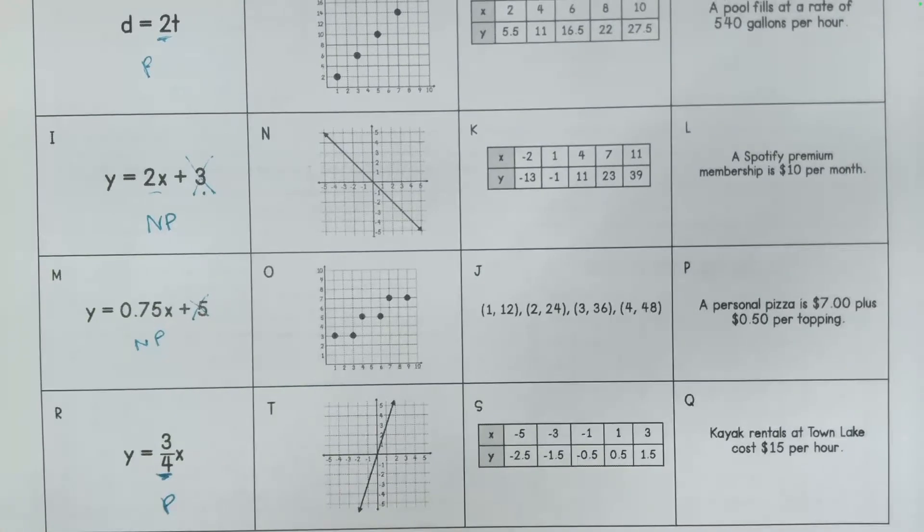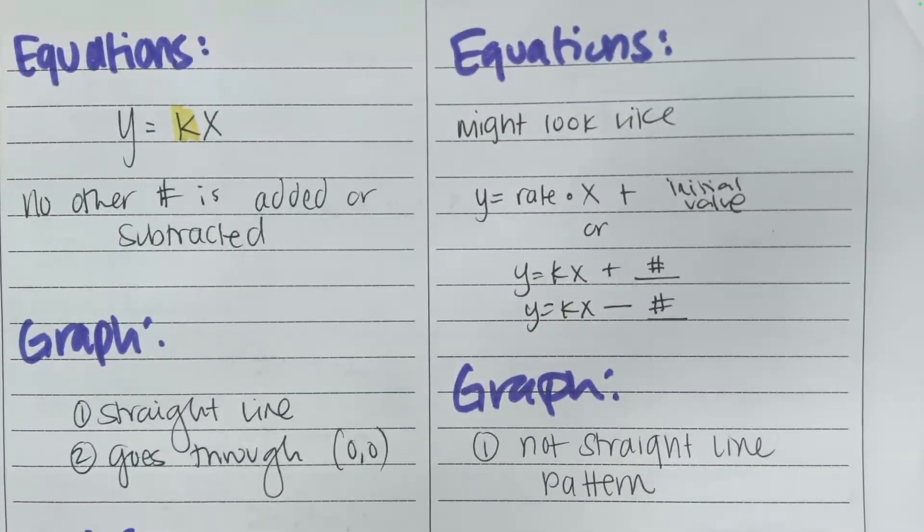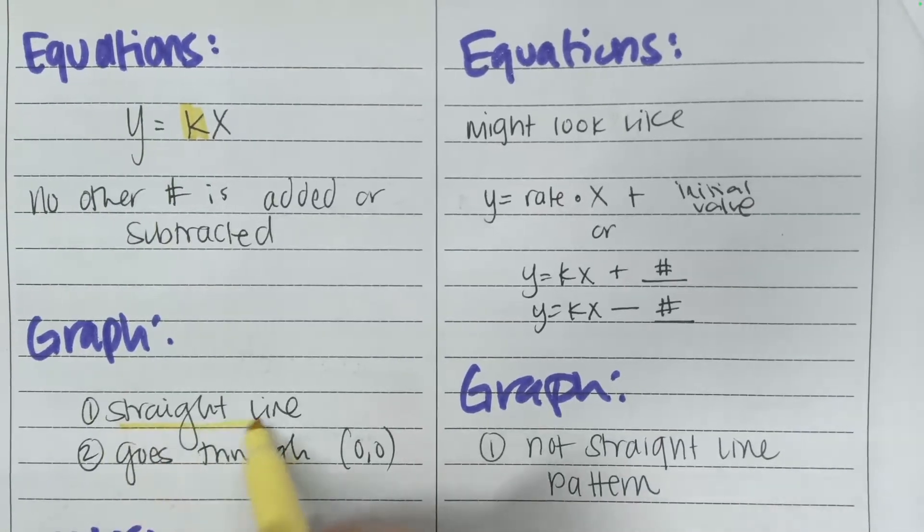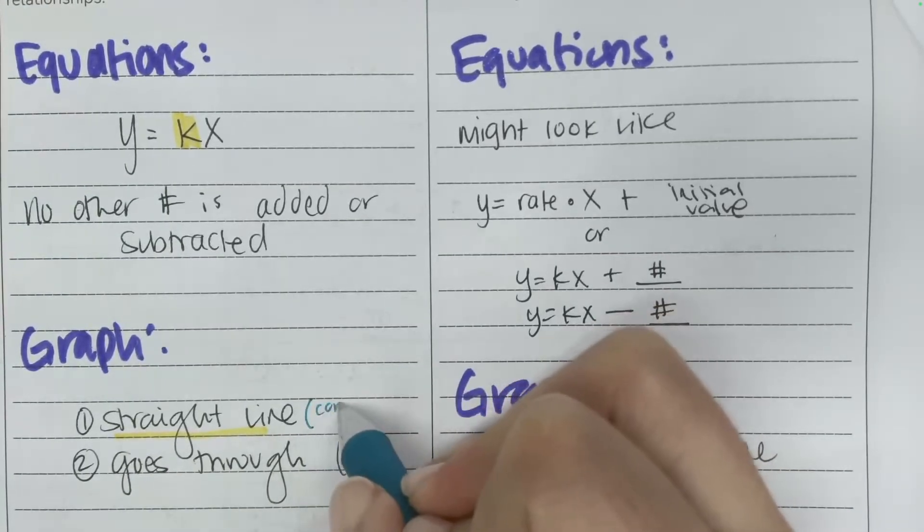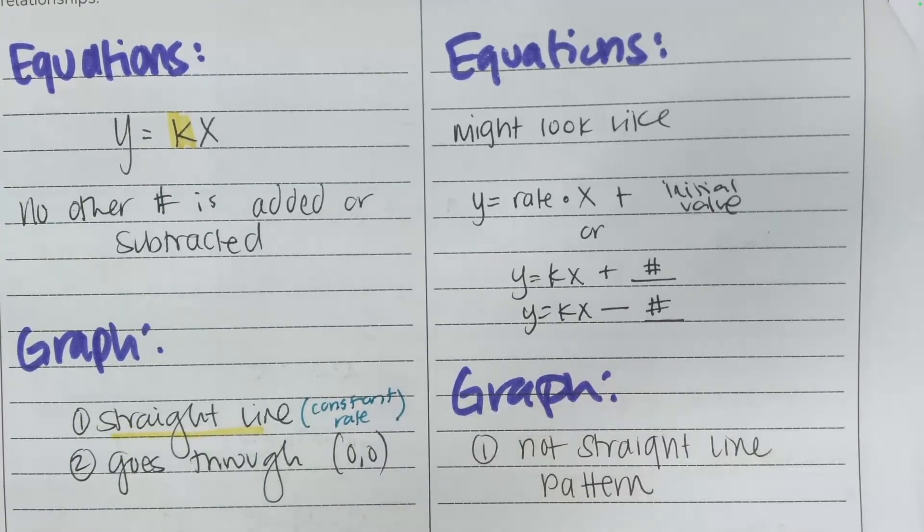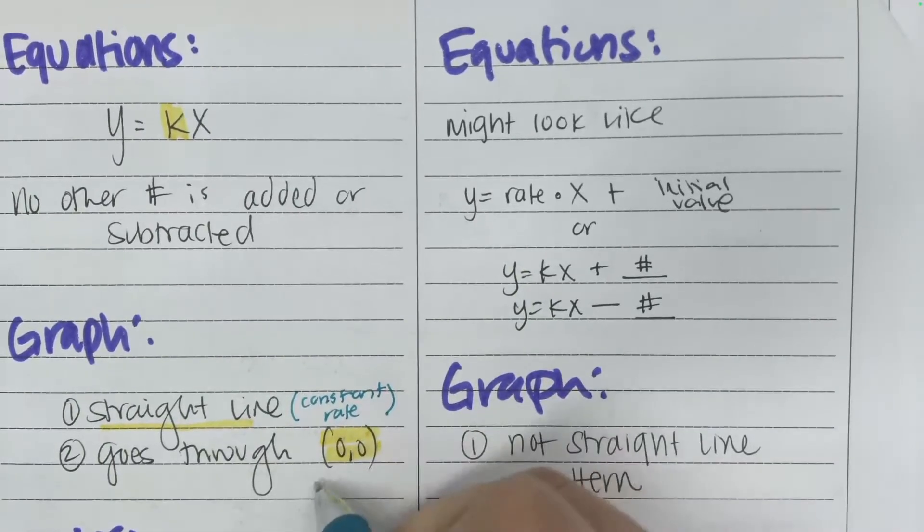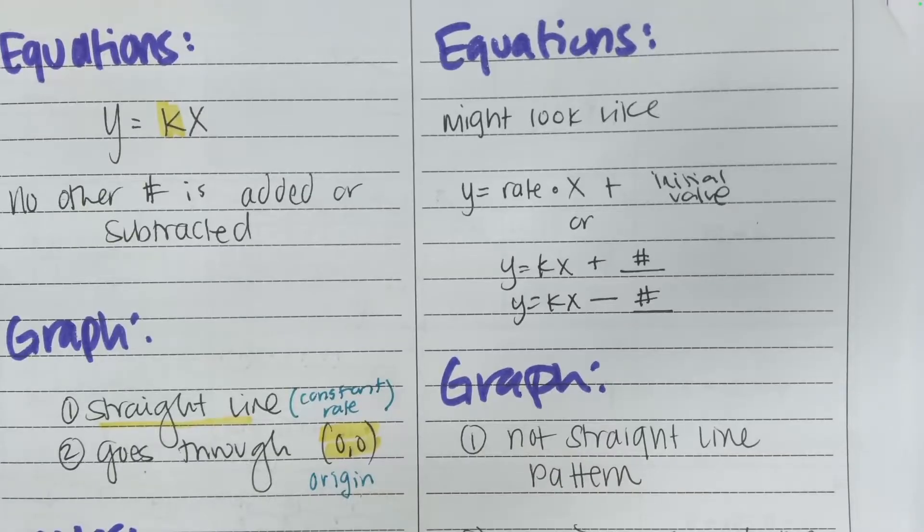Now looking at all the graphs that we've seen here so far, when do you know if you have a proportional graph? So if you were ever asked, why is this graph proportional? Two easy answers you can say is that it's a straight line, which means, by the way, that it's a constant rate. But it also has to go through the origin. This is the origin, which is at 0, 0.